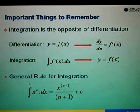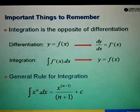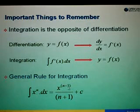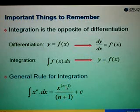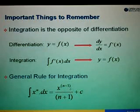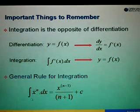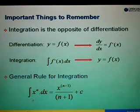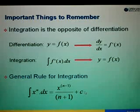The general rule for integration is that when we are asked to integrate x to the power n, the first step is we need to add 1 to the power. Then we divide the function by the new power n plus 1. Since there's no limit for this integration, we have to add C. But in case there's a limit, we have to ignore the C.